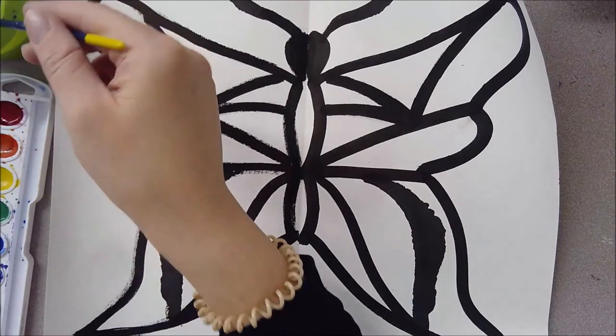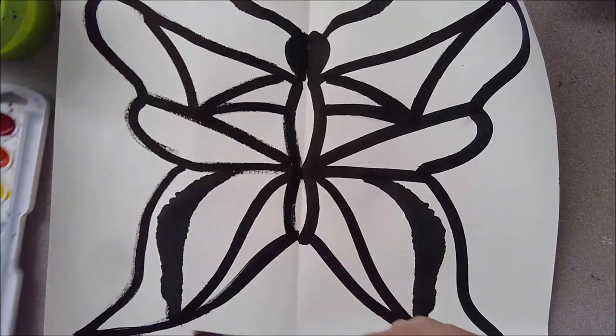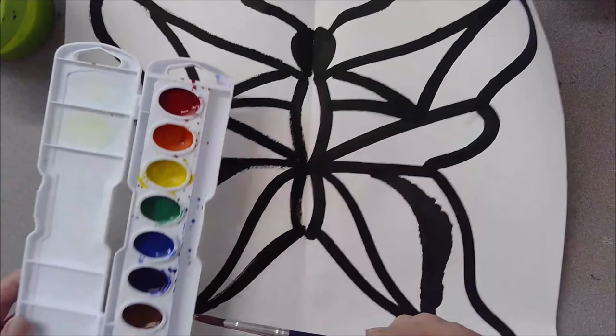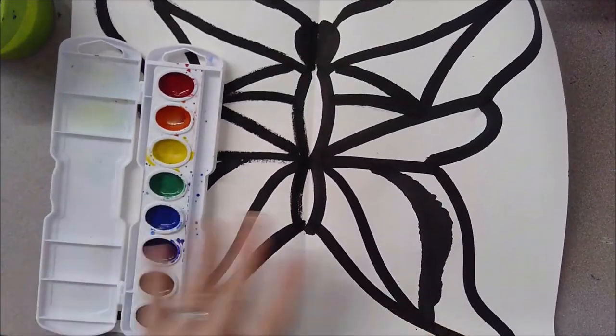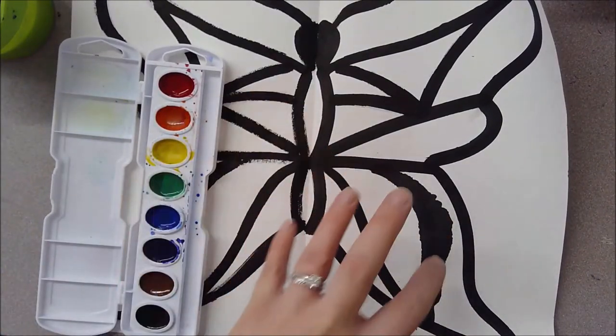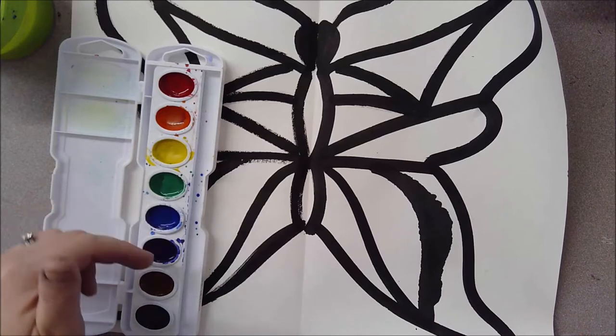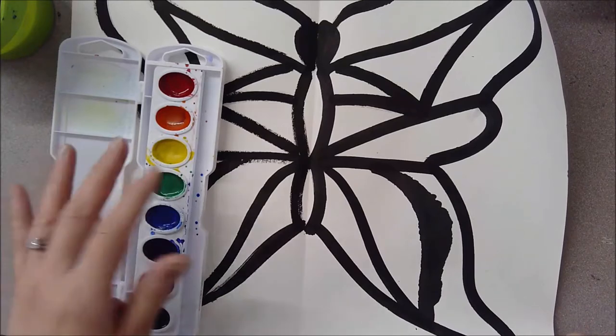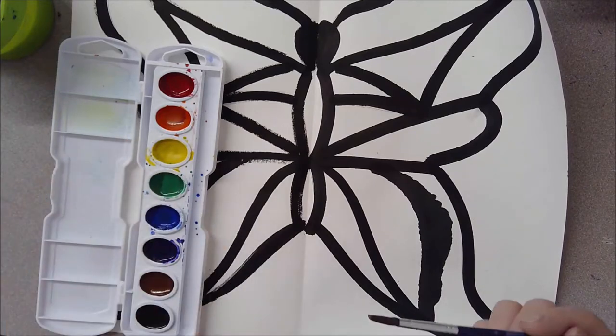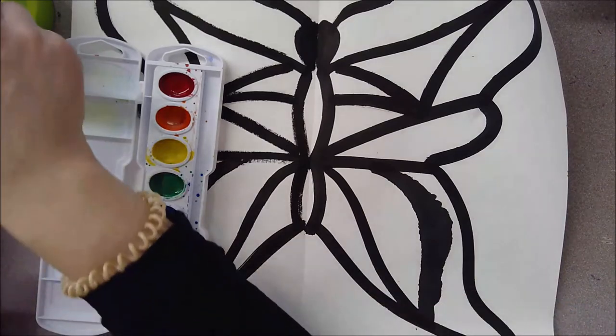So I'm going to just dive in and start painting some of my wings and I'm going to be thinking of a color theme that I want to go with. So I want to decide what colors I think would look good together and how I want to group them together. I think in this particular example I'm going to do a cool color butterfly, but feel free to add splashes of colors or use whatever color scheme that you think would look good.